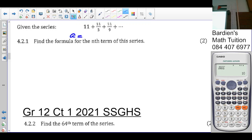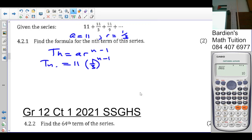People, what's your a value here? 11. What's your r value? A third. How do you get the third? It's going to be T2 over T1 or T3 over T2. So find the formula for the nth term, so TN is equal to AR to the N minus 1. Your a value is 11. Your r is a third to the N minus 1. That's your general term as required.